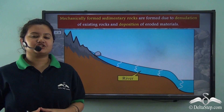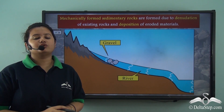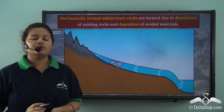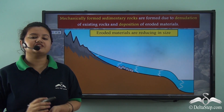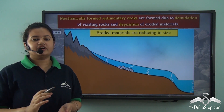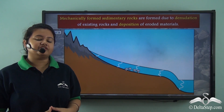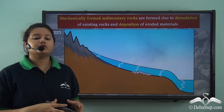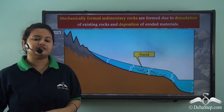These rocks are formed due to weathering and erosion of pre-existing rocks. We know natural forces like rivers erode the land surface when they flow over them. Now, in the upper course of the river, the size of the eroded particles are larger, like in the case of gravels.